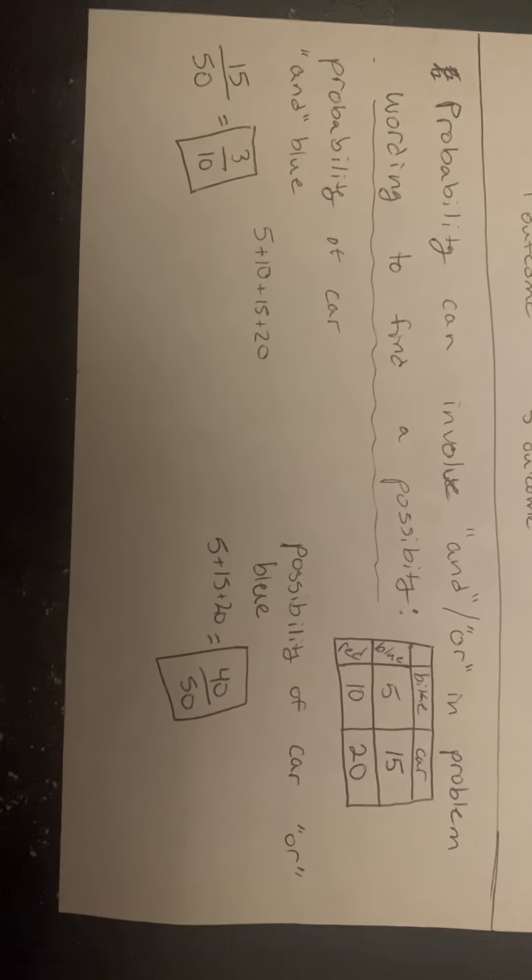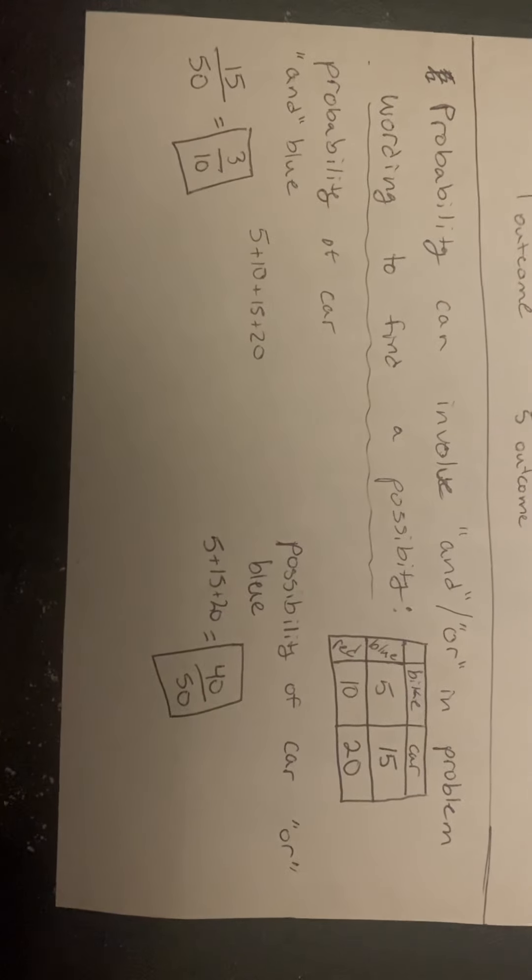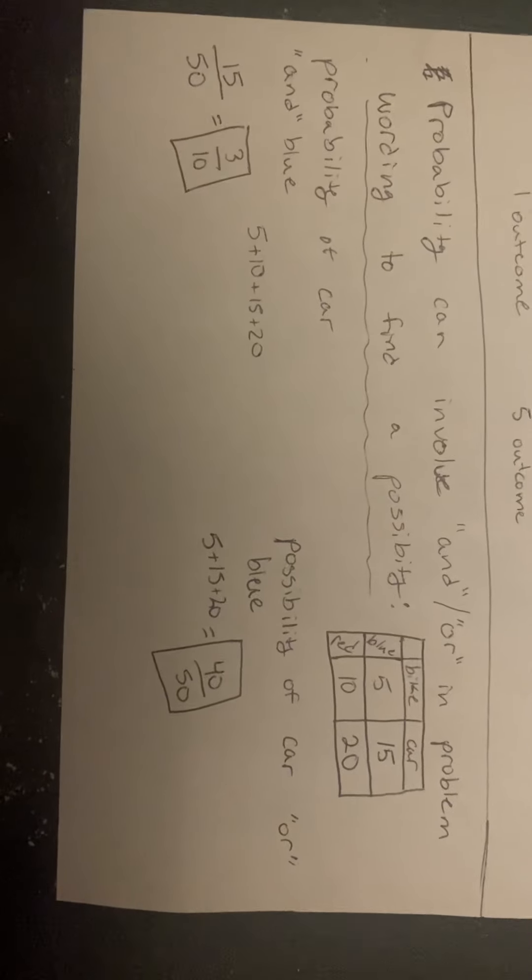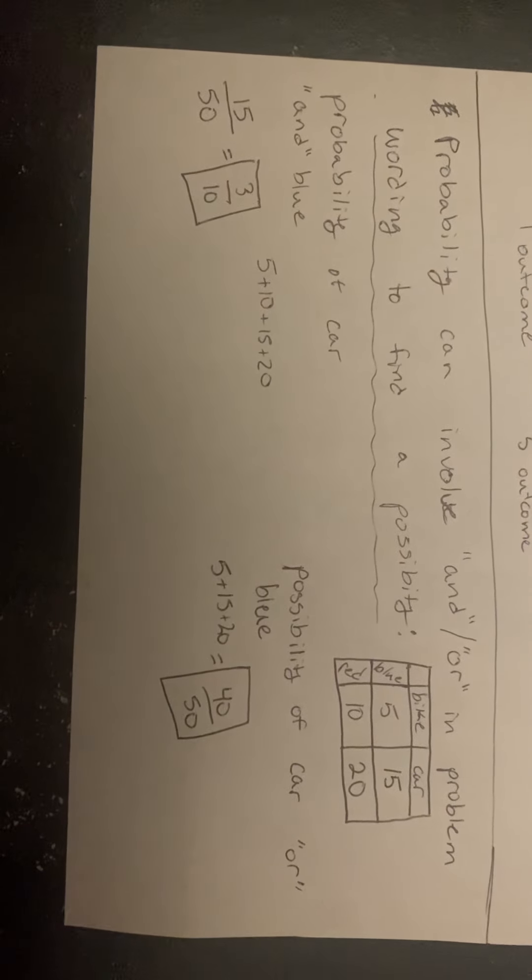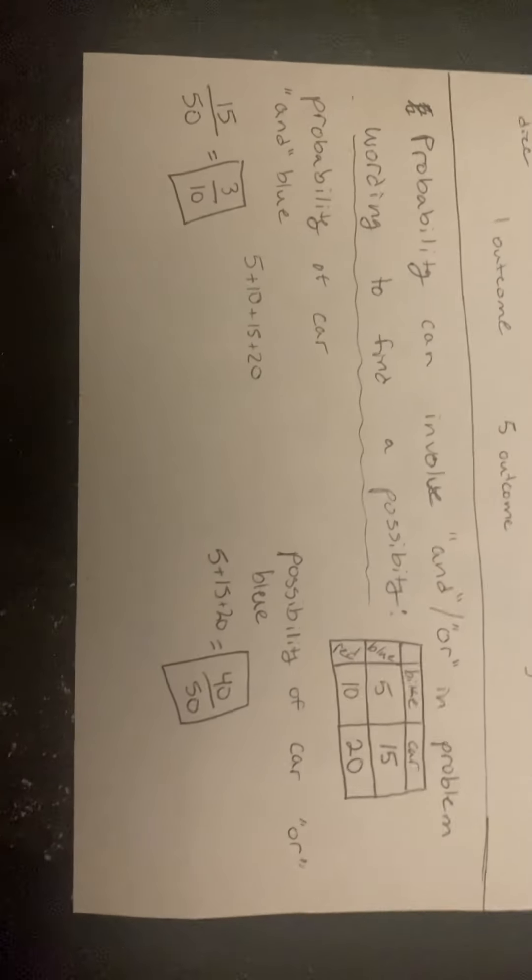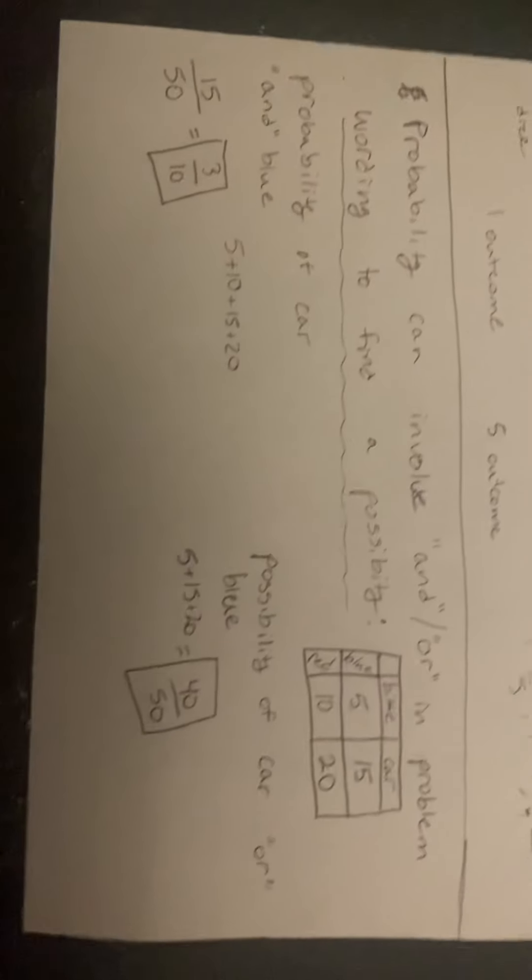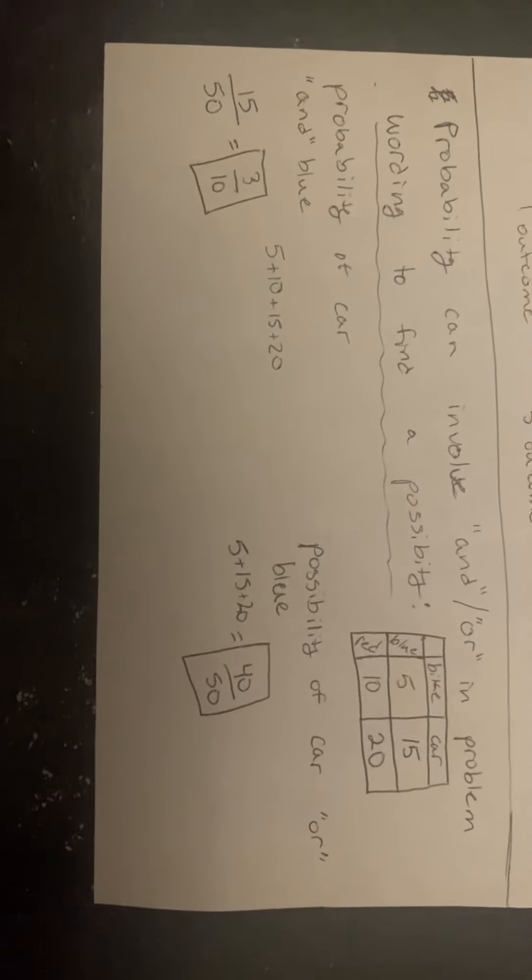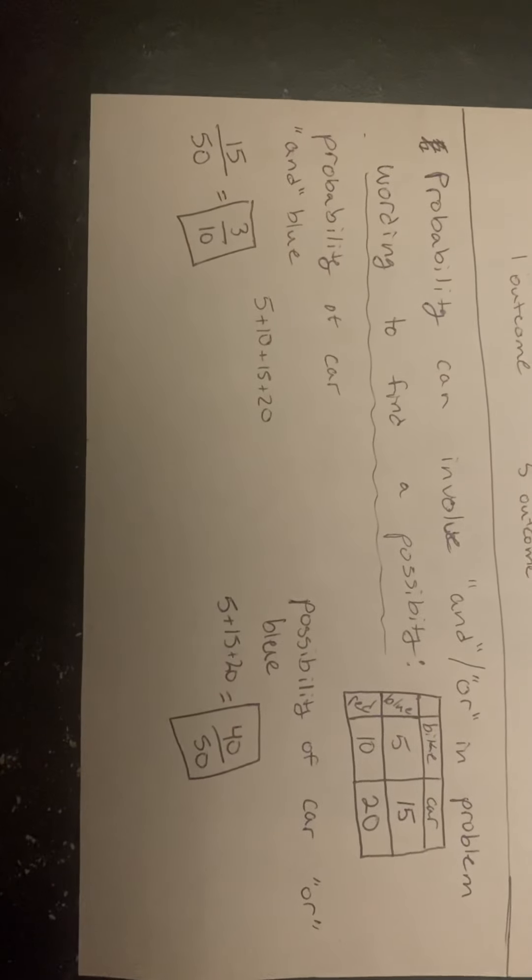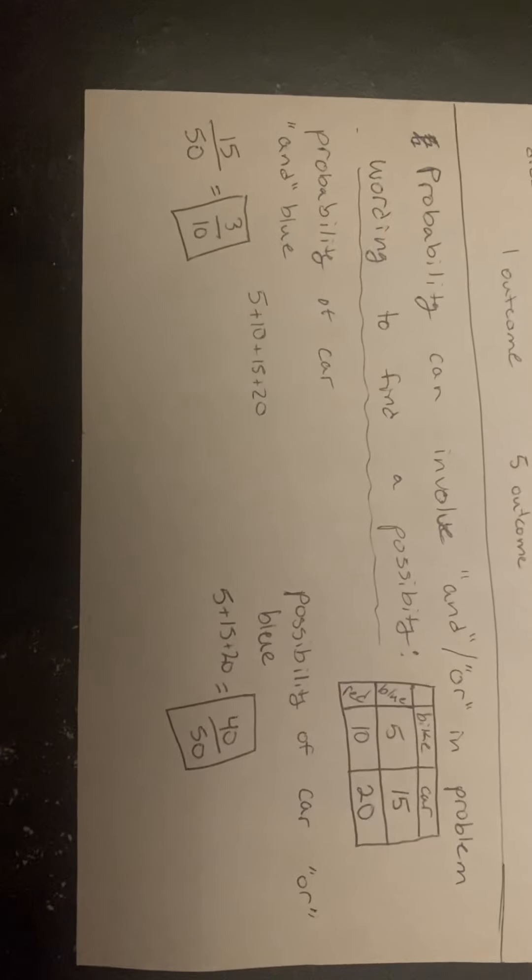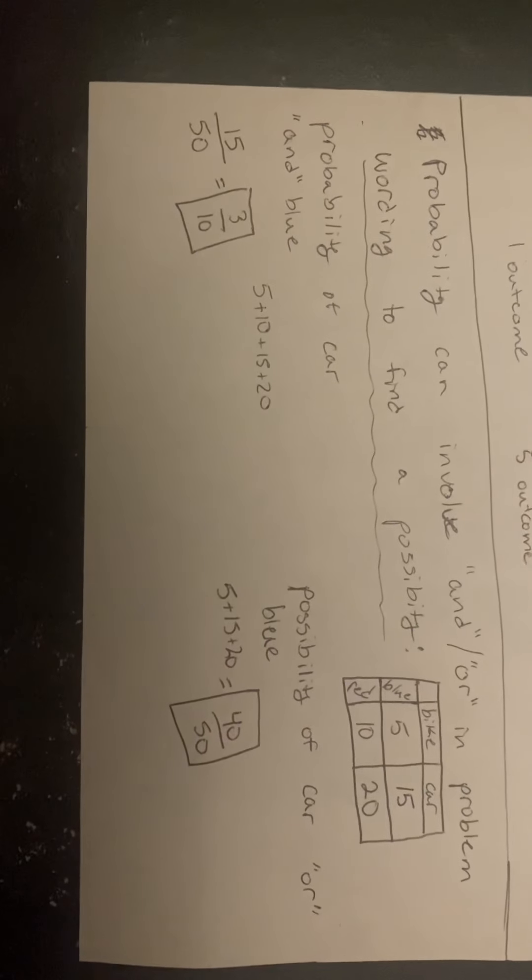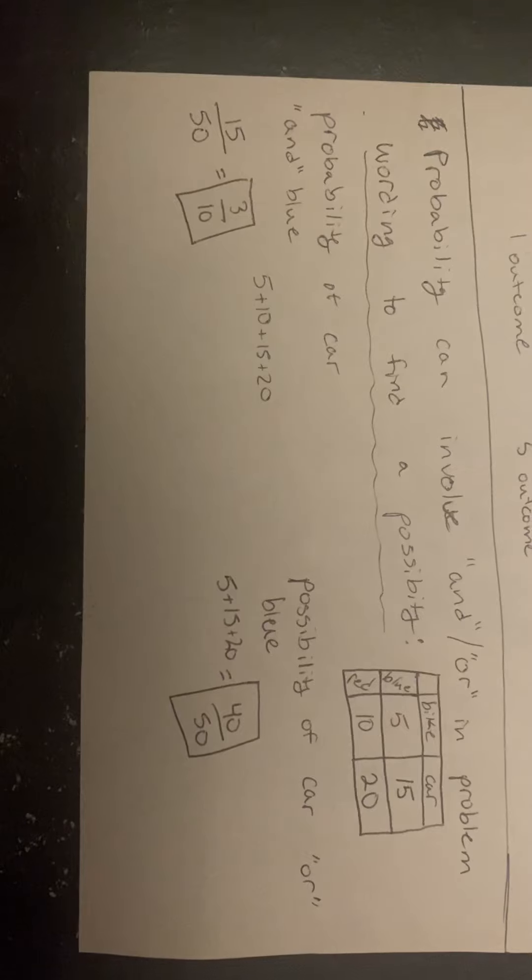We have the ratio of possible outcomes to total outcomes, which is 15 to 50. When we simplify, we get 3/10 or 0.3.